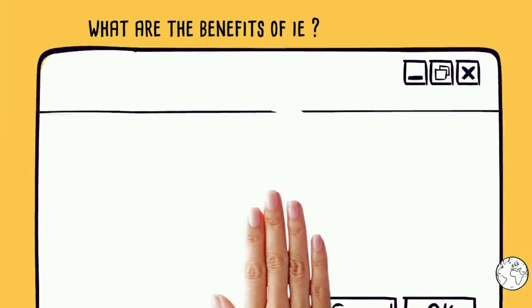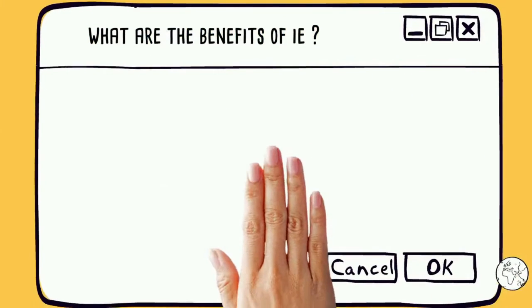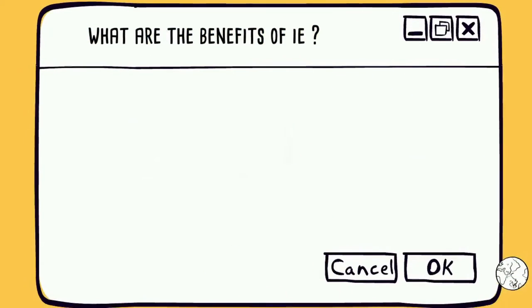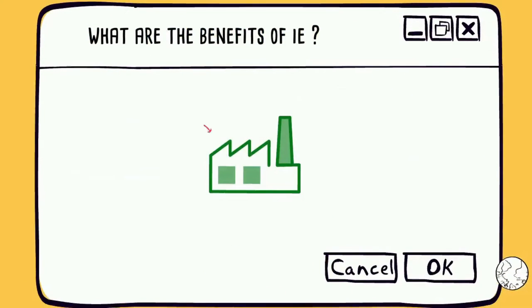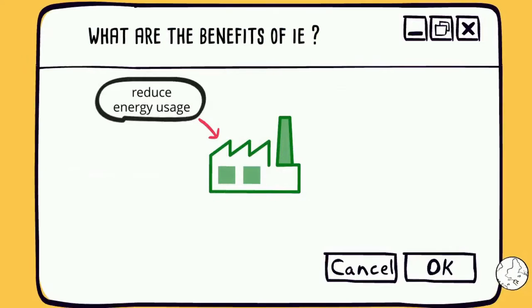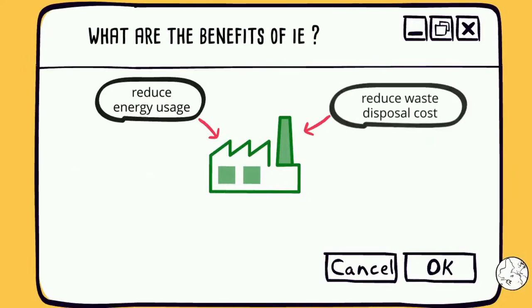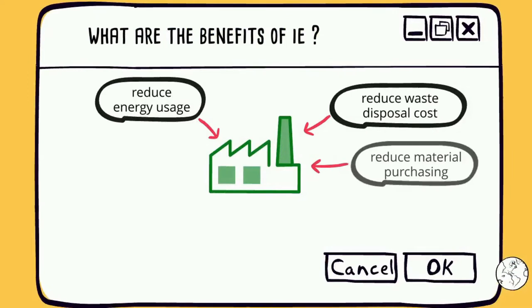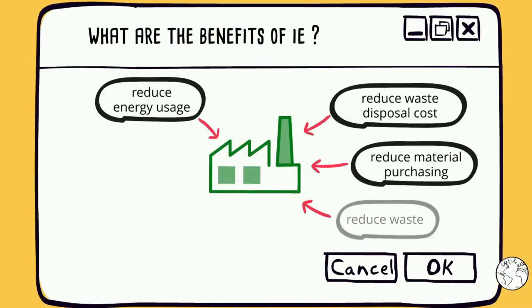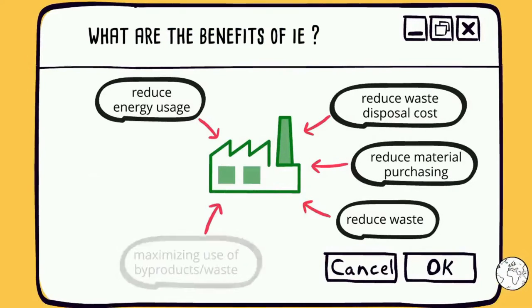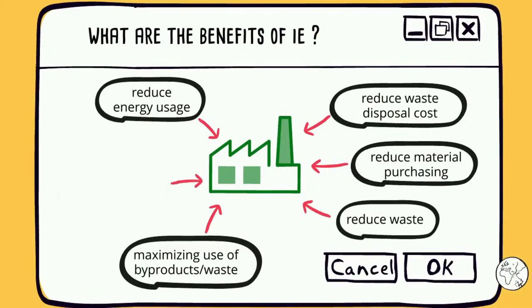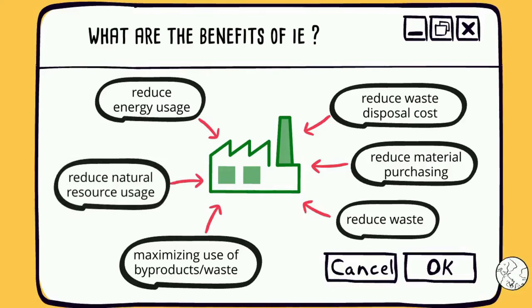What are the benefits of industrial ecology? Through industrial ecology, we can reduce energy usage, reduce waste disposal cost, reduce material purchasing, reduce waste, maximize use of our waste, and also reduce natural resource usage.